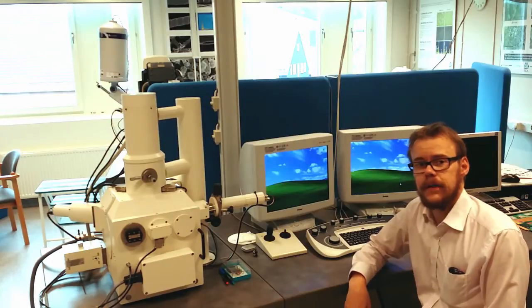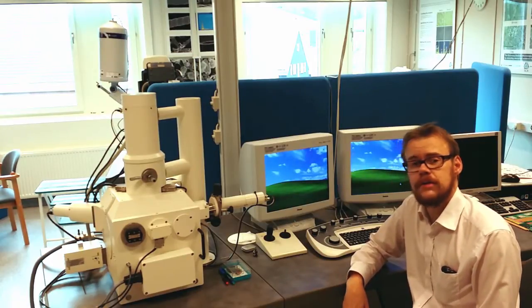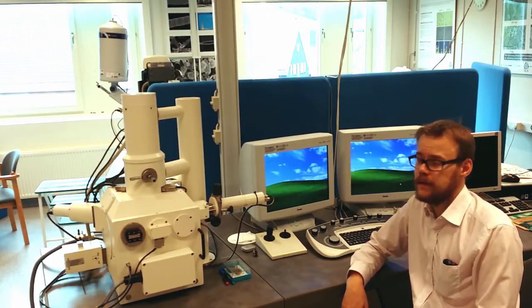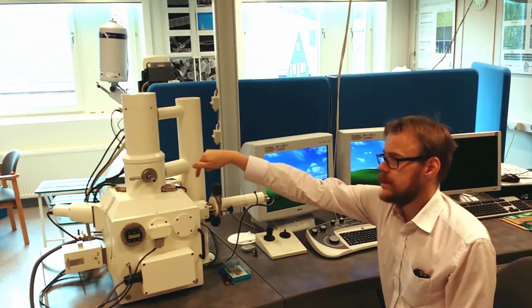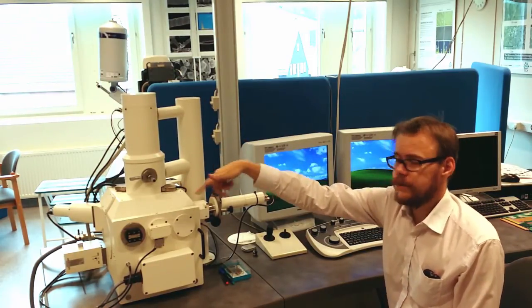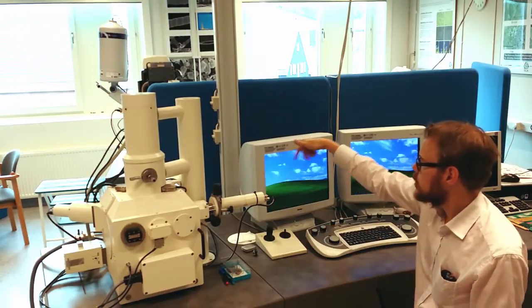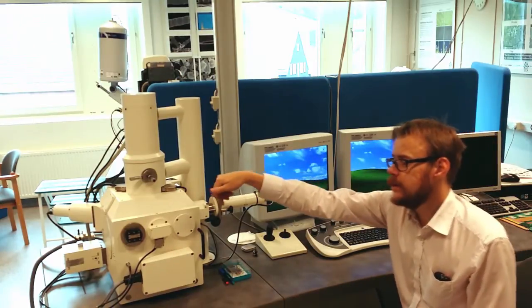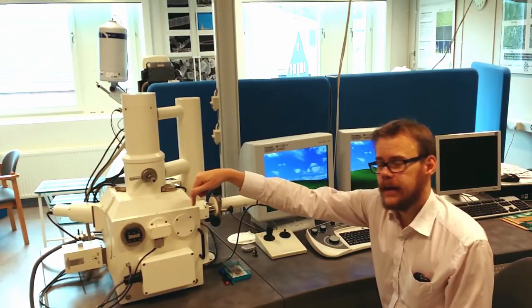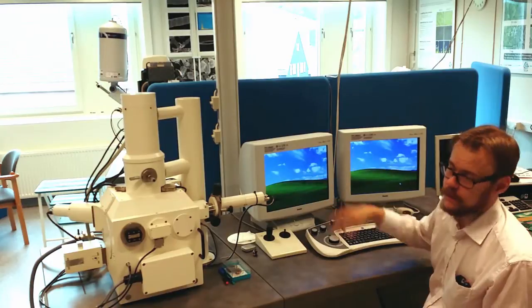The scanning electron microscope basically works like an old cathode ray tube television. The electron beam in this gun scans across the surface back and forth like this. And the image is represented here on the screen. The smaller area you scan here, the higher the magnification will be.